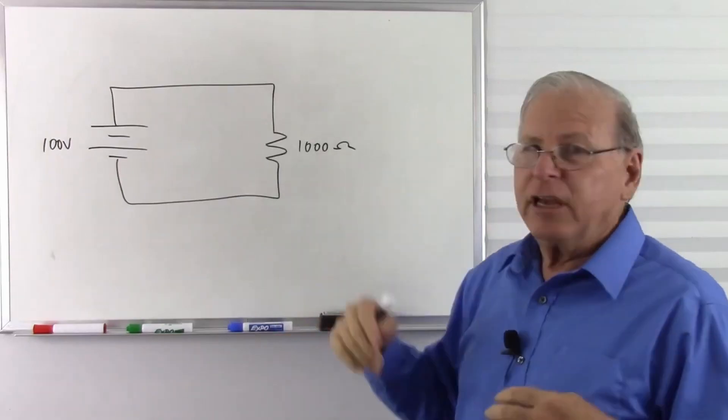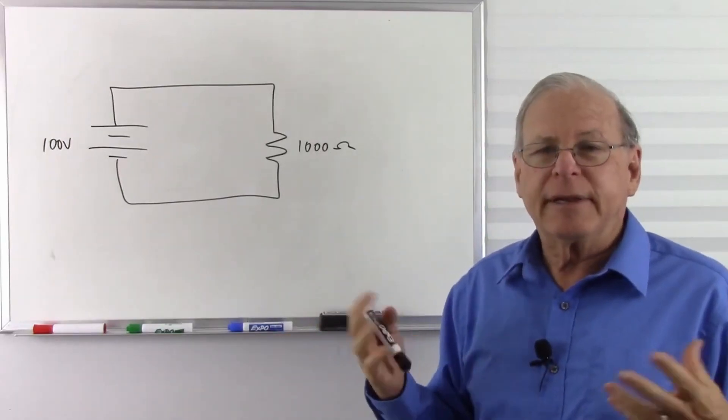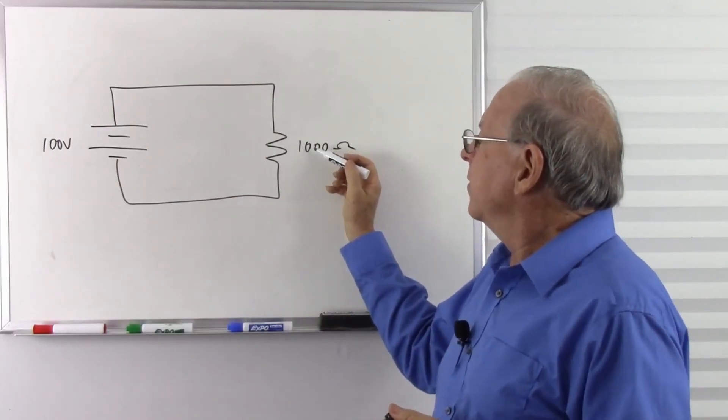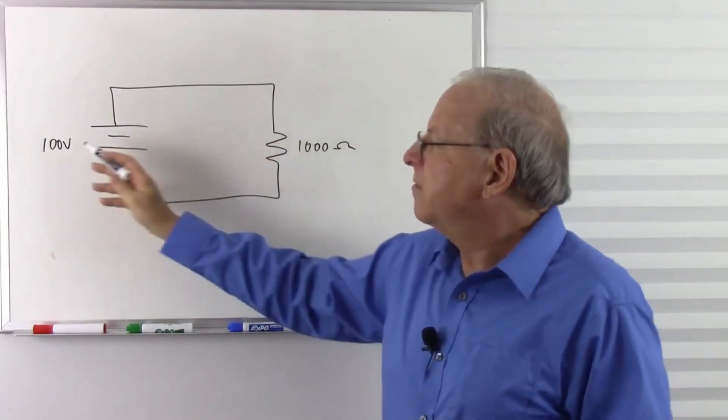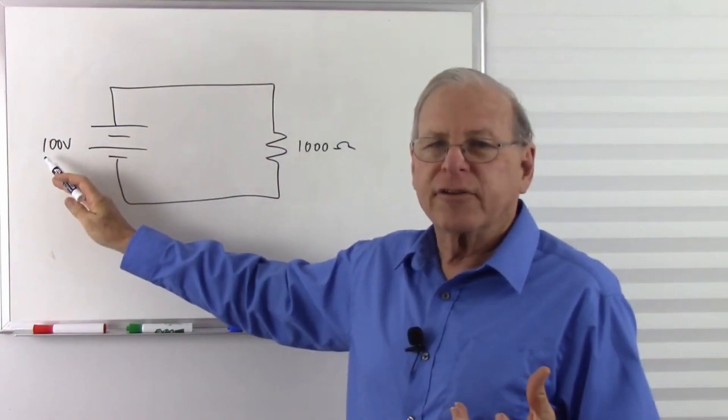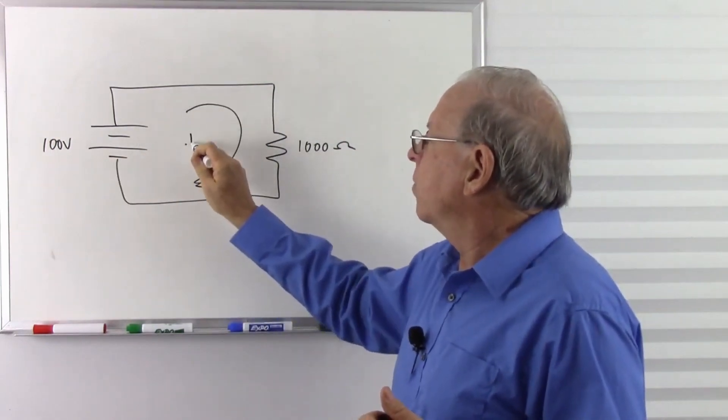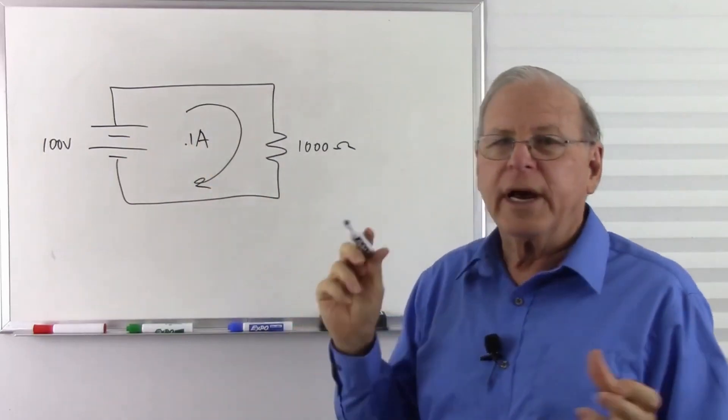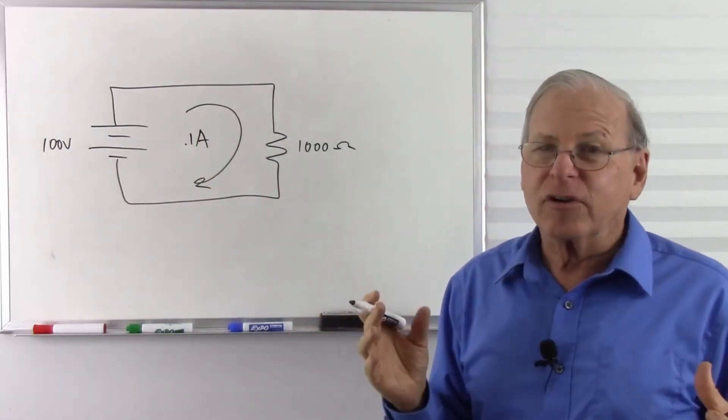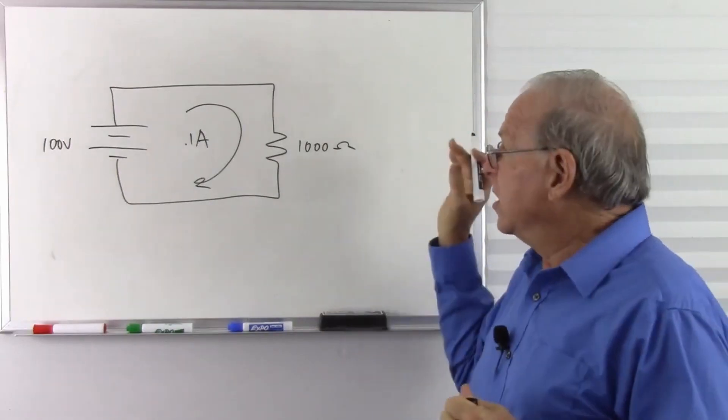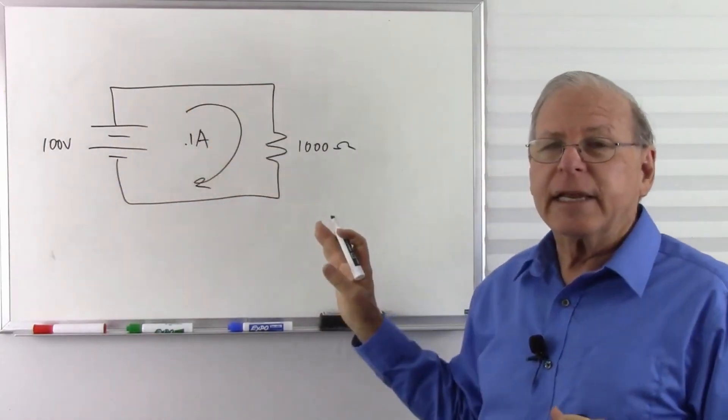Now the common wisdom is that you need 50 to 100 milliamps to be deadly. How much current am I going to have through my body if this is me? Well, you take your resistance, divide it into your voltage according to Ohm's law to see your current. So how much current do I have? About 0.1 amps or 100 milliamps. That's certainly enough to theoretically stop the heart. So yes, 100 volts could be deadly.